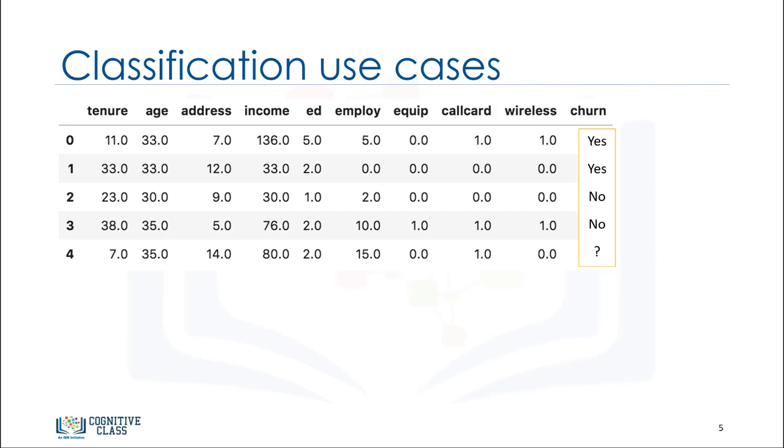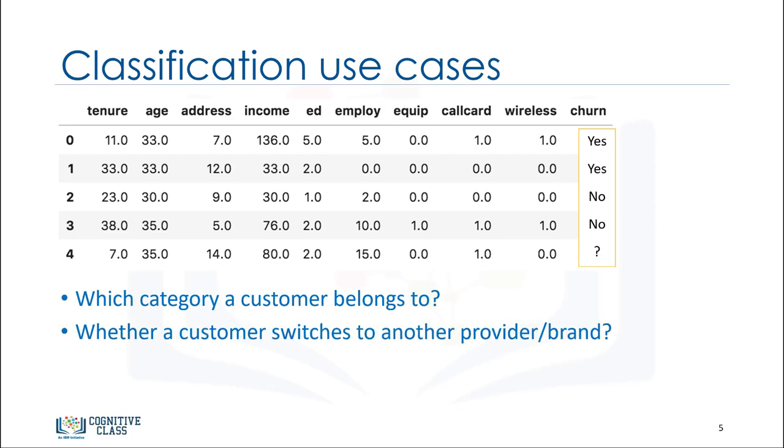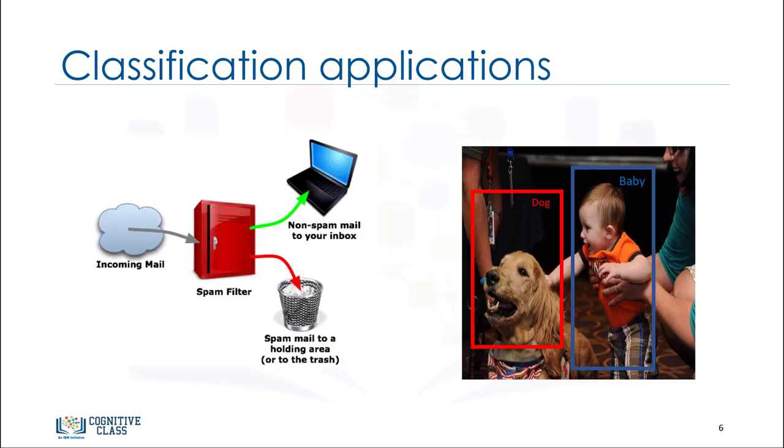Classification has different business use cases. For example, to predict the category a customer belongs to, for churn detection where we predict whether a customer switches to another provider or brand, or to predict whether a customer responds to a particular advertising campaign.